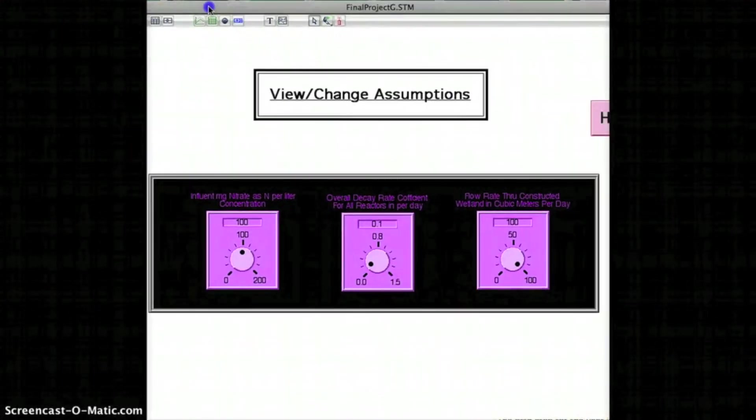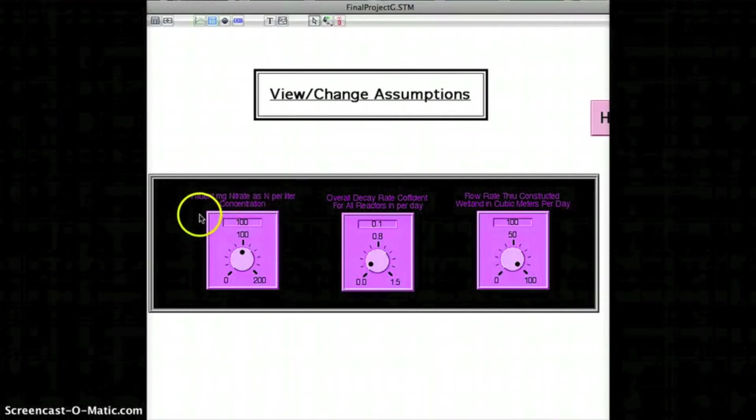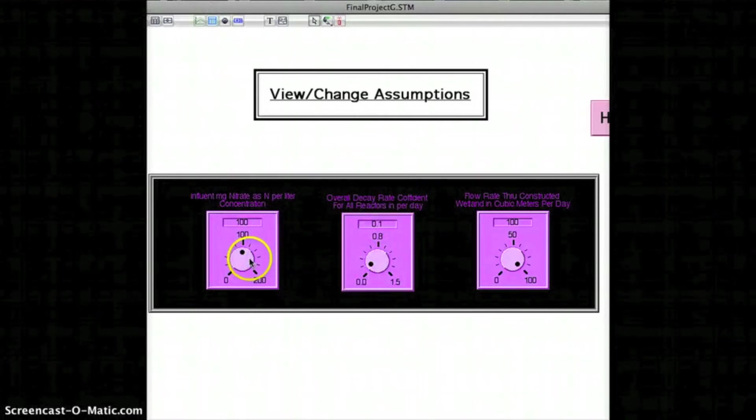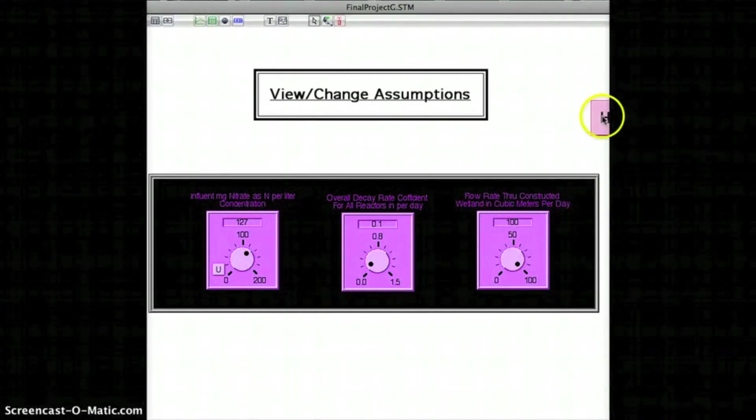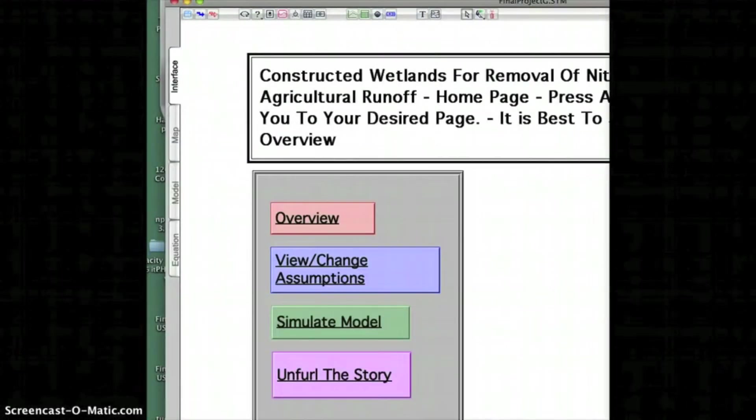Here, this is a bunch of the variables that are in my model. This is the influent nitrate nitrogen concentration. This is the decay rate. You can pick numbers on the dial here to use. And finally, there's a flow rate here that's going through the wetland. And there's a home button so I can get back home.